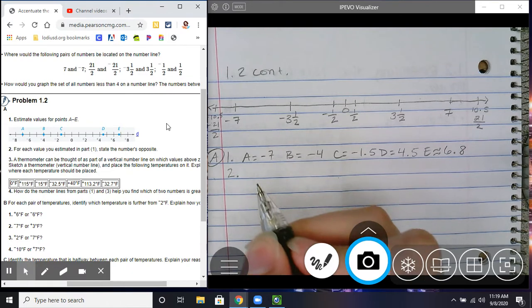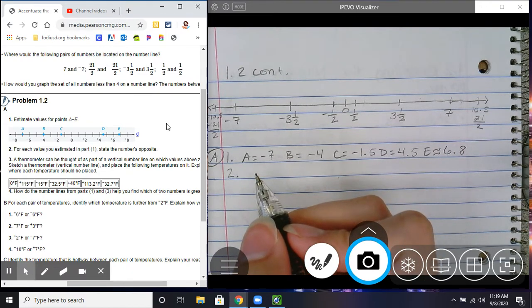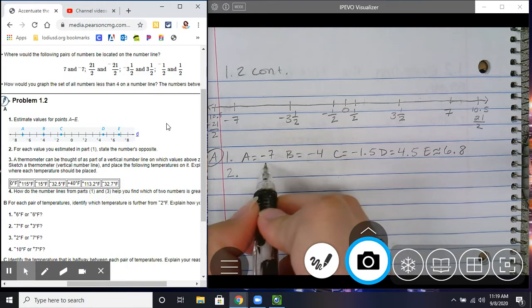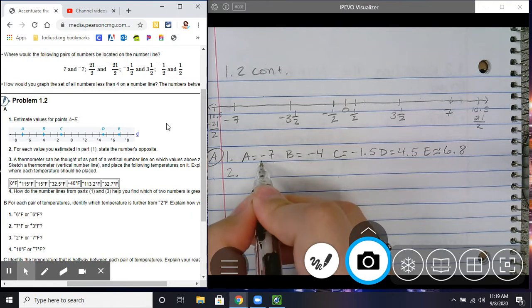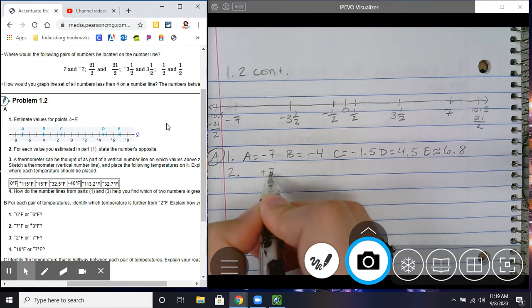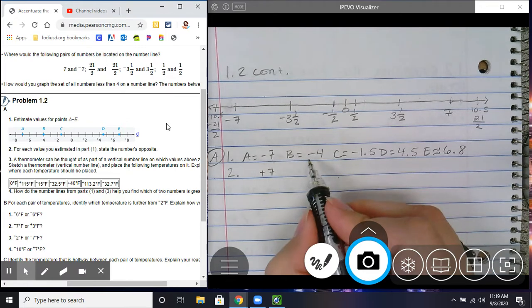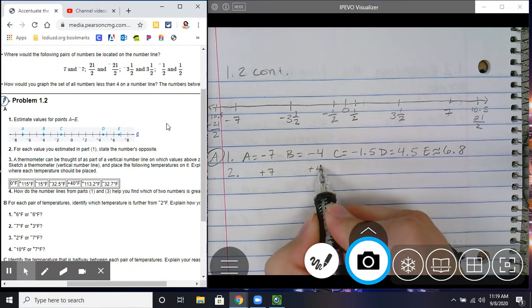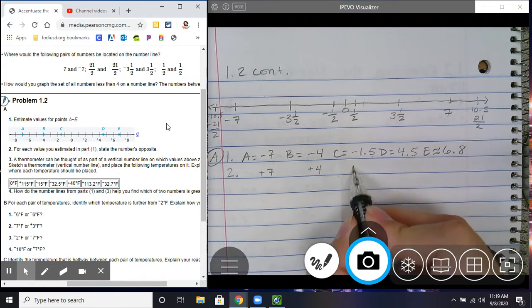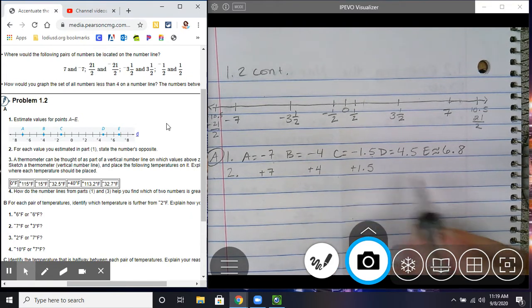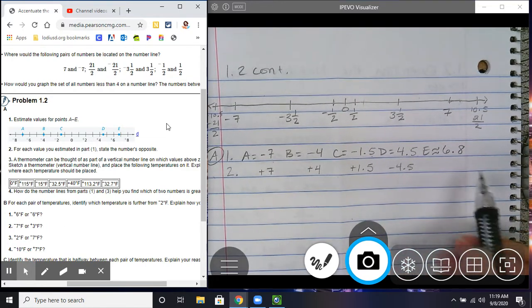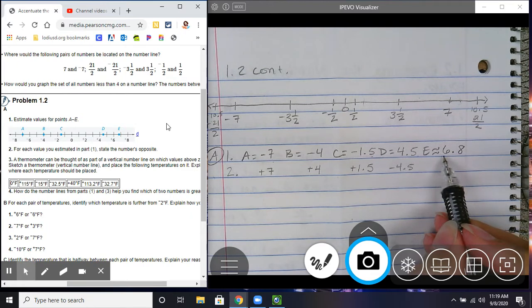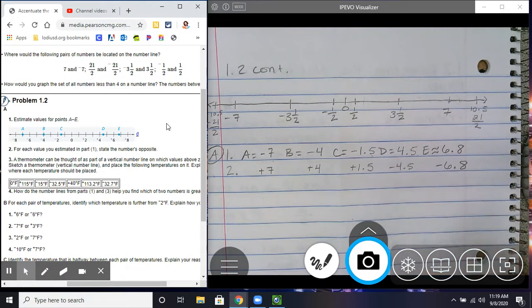Number 2. For each value you estimate in part 1, state the numbers opposite. So, if this is the number for A, the opposite of negative 7 would be positive 7. Opposite of negative 4 would be positive 4. Opposite of negative 1.5 would be positive 1.5. Opposite of positive 4.5 would be negative 4.5. And the opposite of approximately positive 6.8 would be negative 6.8.